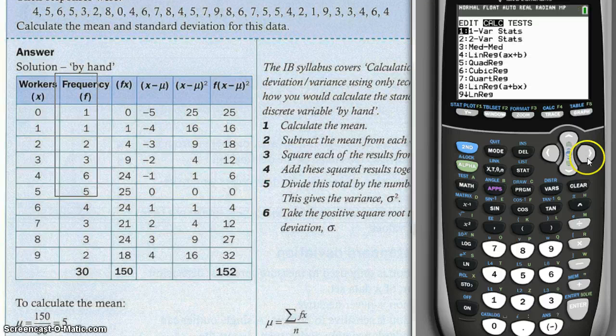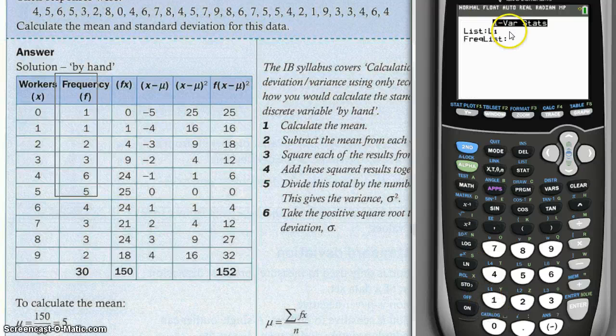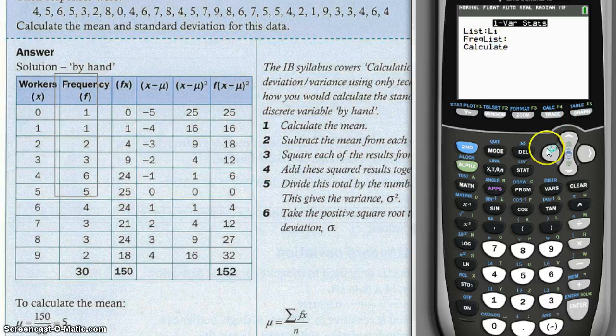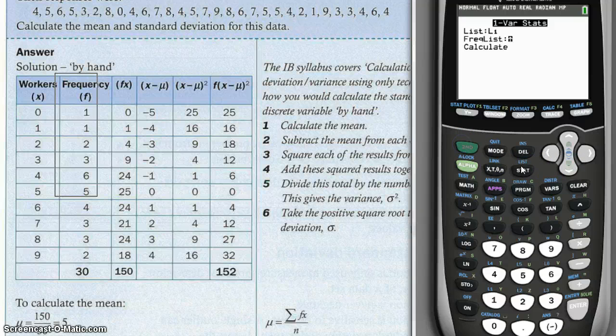So the list is my L1 - that's correct. The frequency list is my L2, so for that I will have to change it. That's when I go to second STAT, and I can see a bunch of lists.